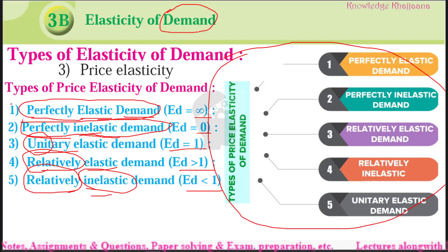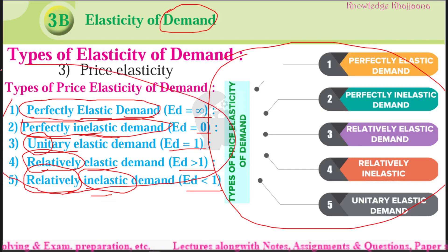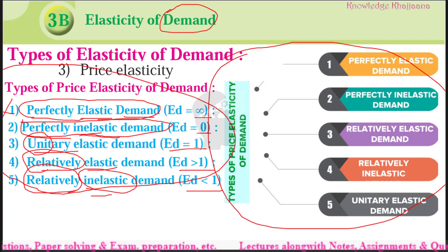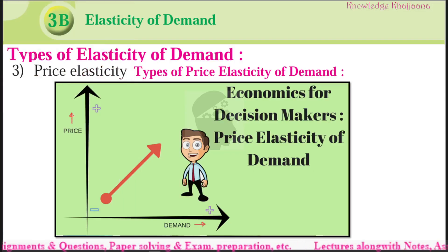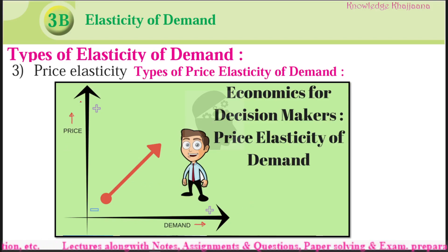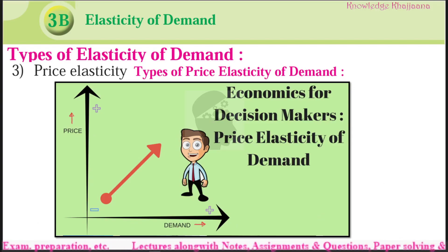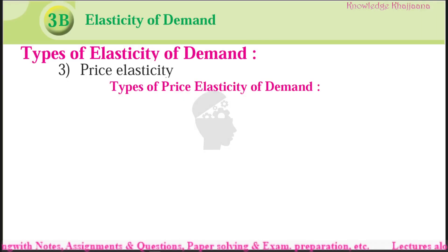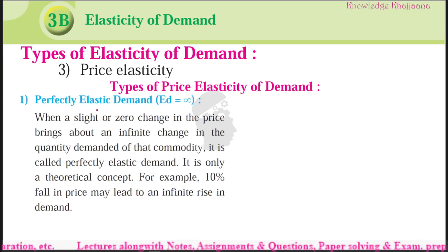If you understand this concept clearly, then it is very easy to understand the five different types of price elasticity of demand. Economics for decision makers — it is useful for price elasticity of demand. It is very useful for understanding the price elasticity of demand. With increasing the price, demand decreases; or with decreasing the price, demand increases.